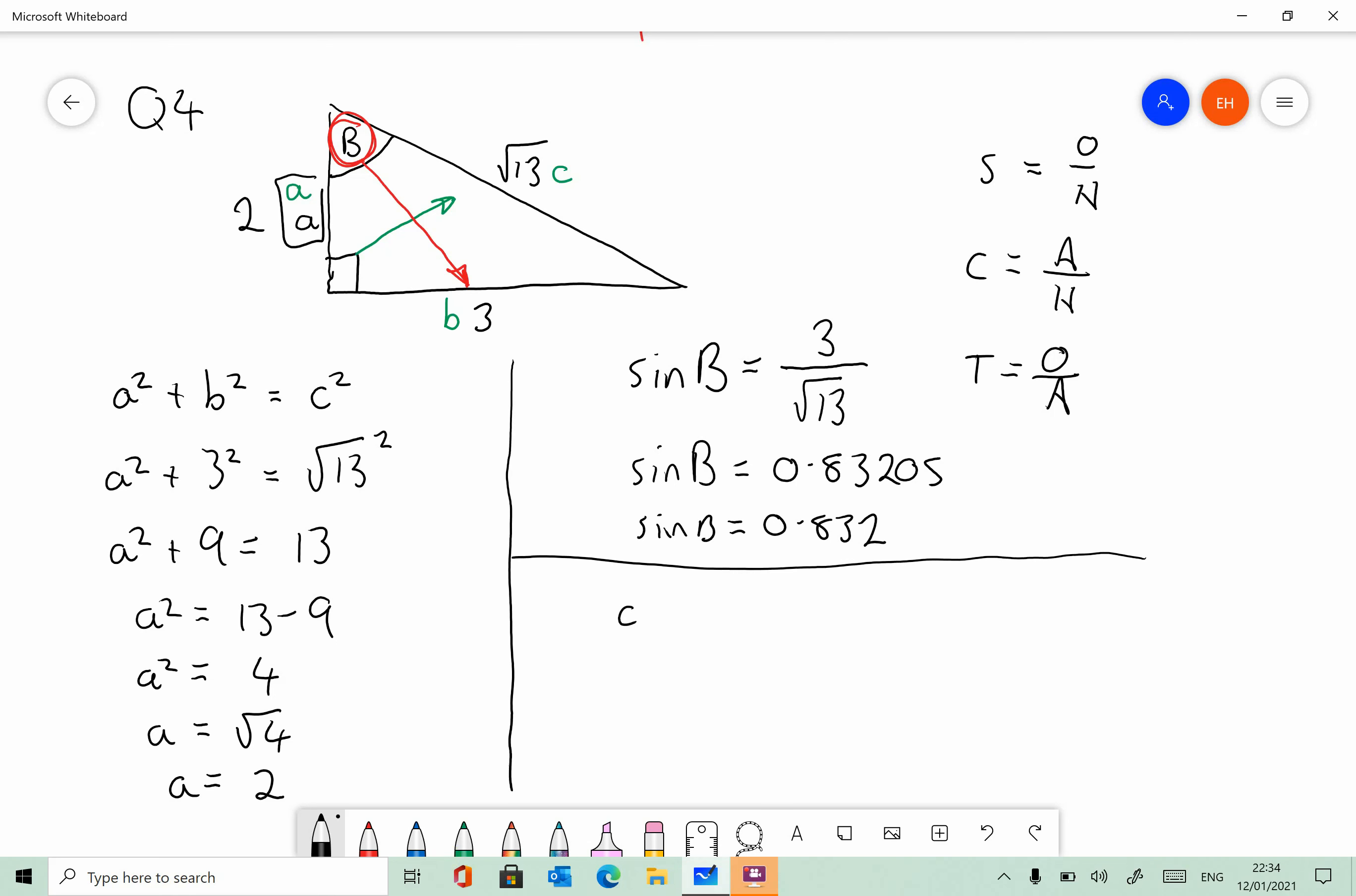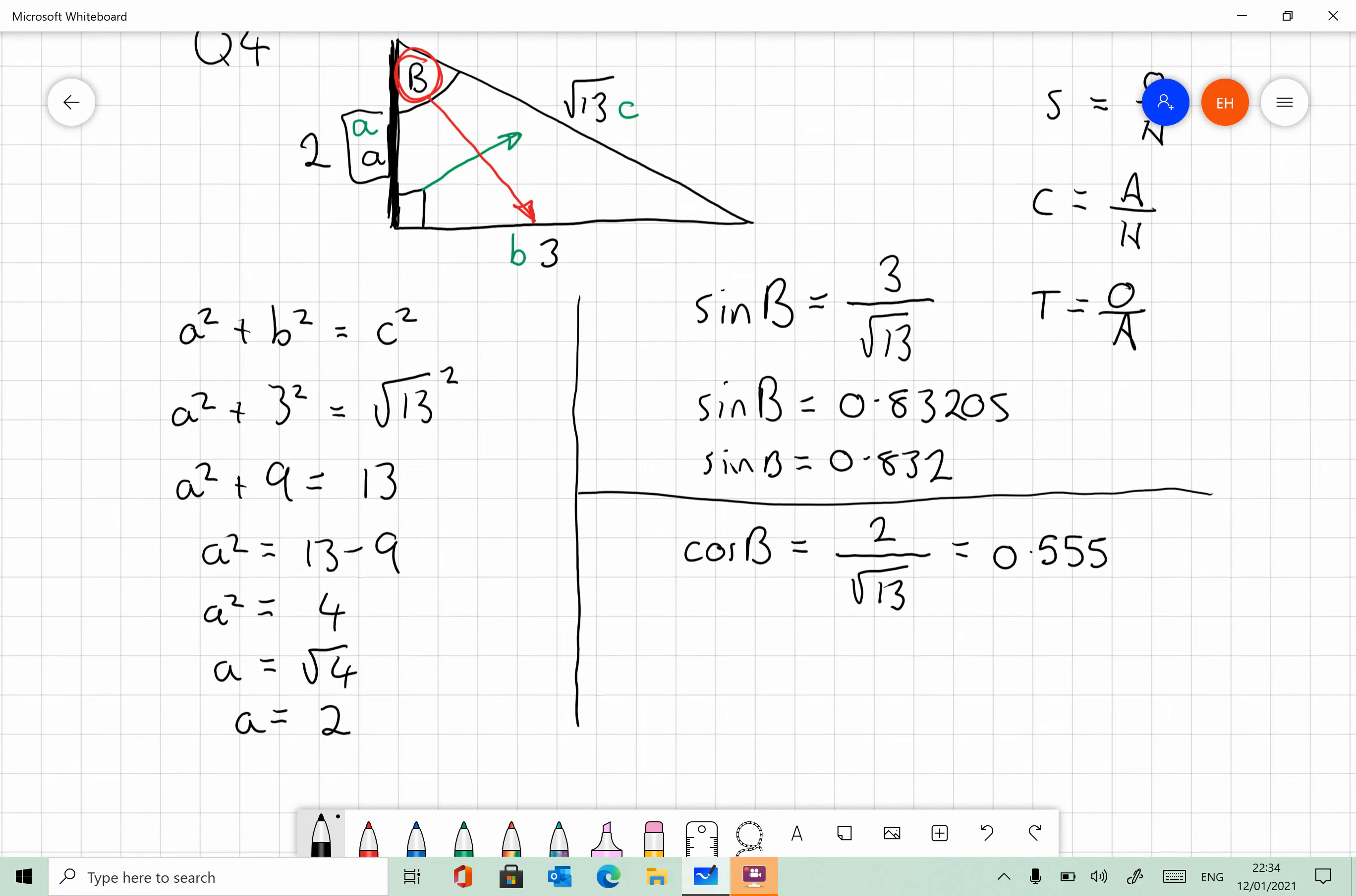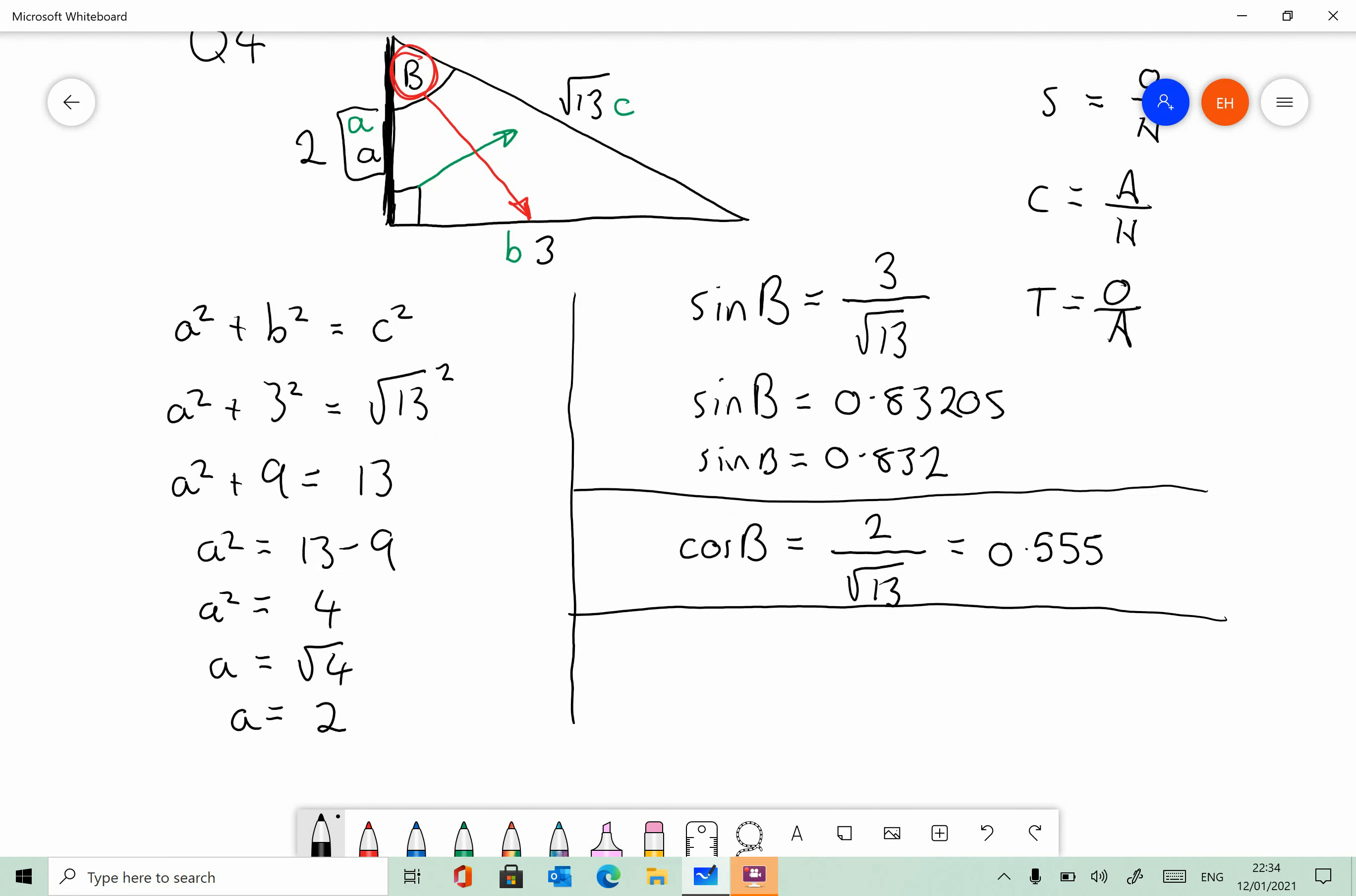The next thing we need to look at is cos of B or cosine B. And that's equal to the adjacent over the hypotenuse. So we're definitely going to have a fraction. And on the bottom, we're going to have root 13 because that's the hypotenuse. And the adjacent is this side here. That's the side that's touching B. That's not the hypotenuse. So that's the adjacent. So that must be two on top, which is equal to 2 divided by square root of 13 is 0.555. So it's like 0.555.